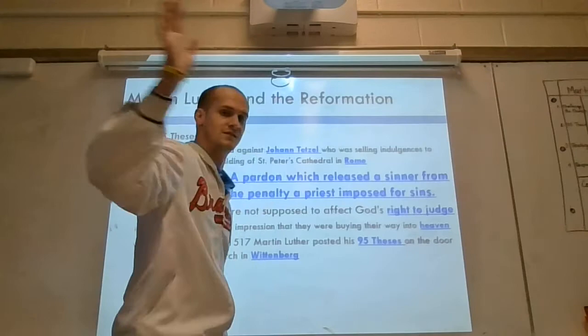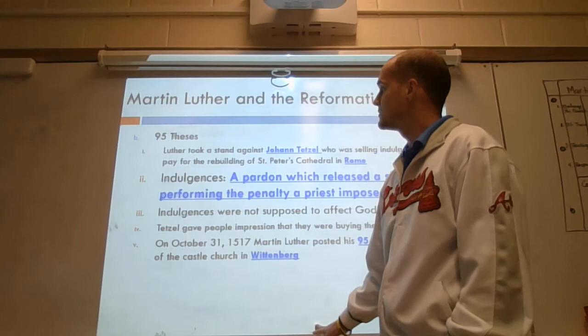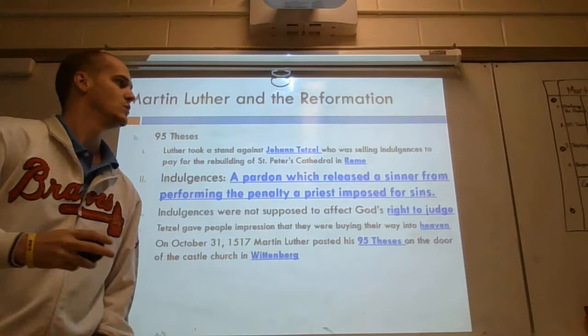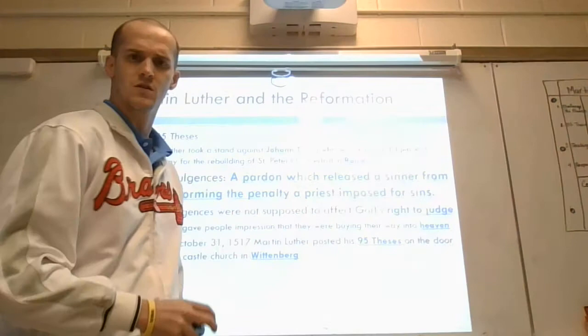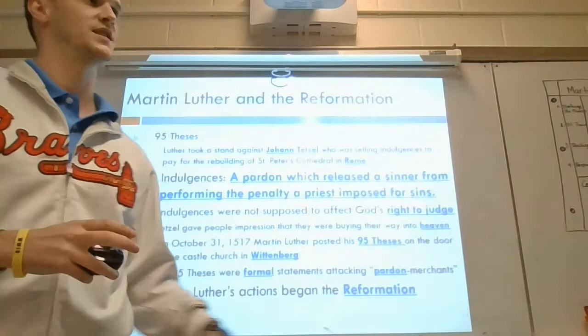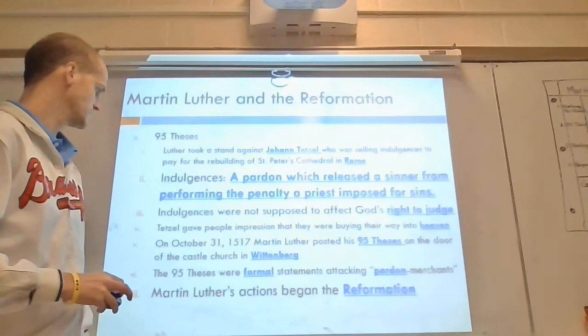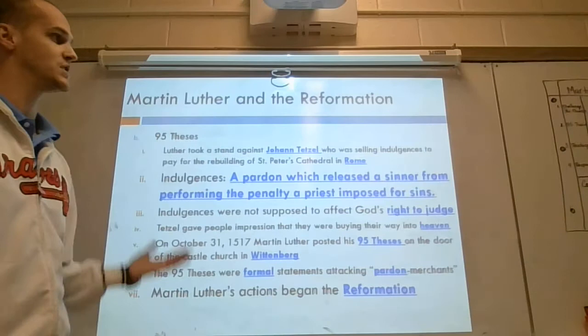He beats the list into the door and then leaves. People come out and start reading the 95 different things that Martin Luther has pointed out is wrong with the church. And all of a sudden people start to question: who's right — is it this man who is a teacher of scripture, or is it their church? The 95 Theses are all formal statements attacking what he calls 'pardon merchants' — 95 different statements of things that are wrong with the church and things the Catholic Church is doing wrong. These 95 Theses begin the Reformation.